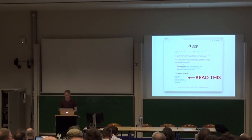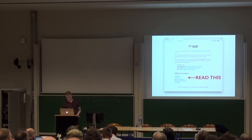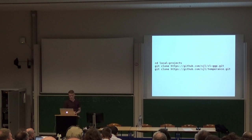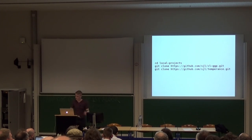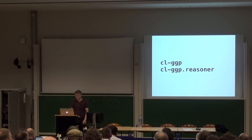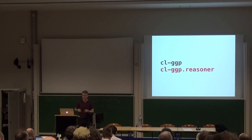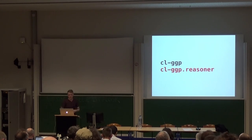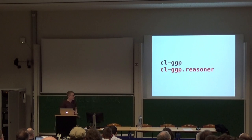It is actually documented, so if you want to do this stuff, read the documentation — it will explain better than I can how to actually do all this. If you want to follow along right now, what you need to do is clone down CLGGP and the logic programming library it uses into your local projects. CLGGP itself provides two systems: CLGGP and CLGGP.Reasoner. The reasoner package handles the underlying logic of the game — taking a game state, figuring out what legal moves are for any particular role. Under the hood it uses the logic programming library Temperance, which is just an implementation of the Warren Abstract Machine, a Prolog VM.